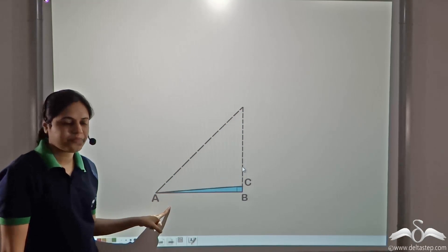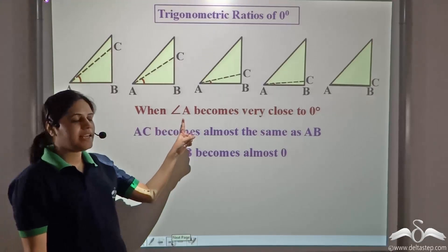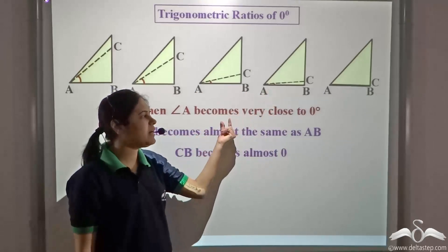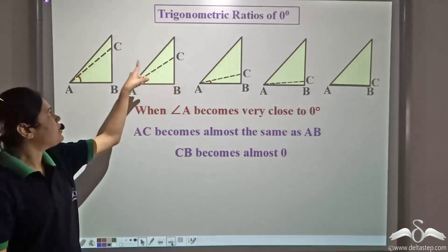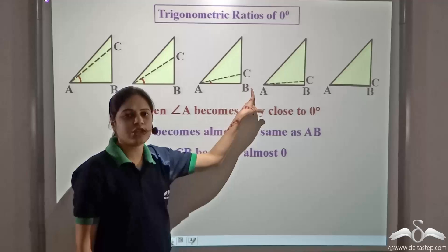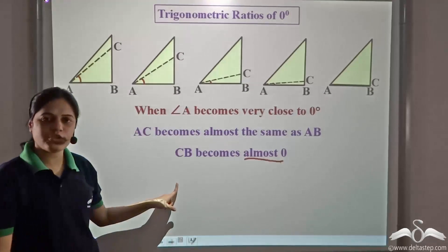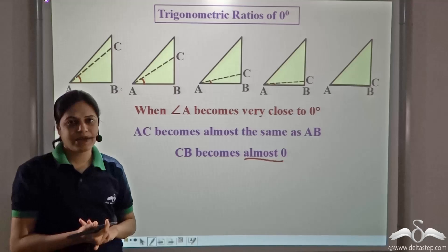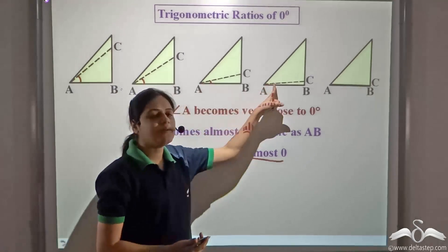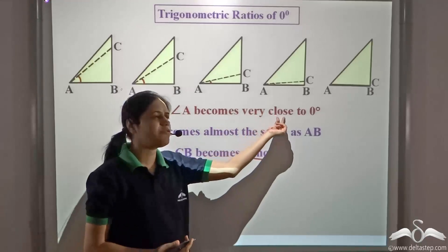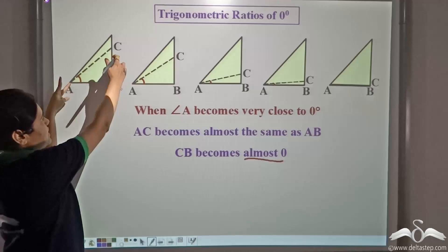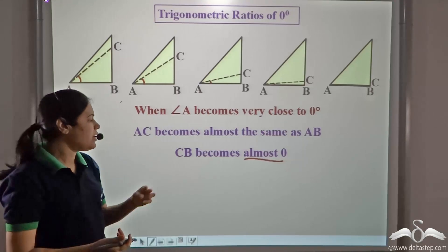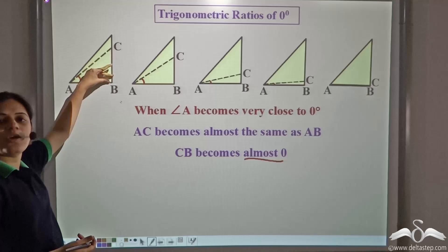We can say that when angle A becomes almost equal to zero — that is, we decrease angle A such that it becomes very close to zero — three things happen. First, angle A becomes almost equal to zero. Second, AC becomes almost the same as AB. Third, CB also becomes almost equal to zero, very close to zero.